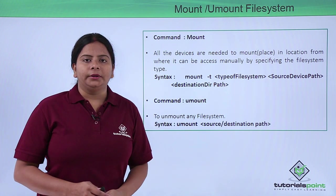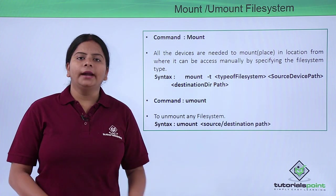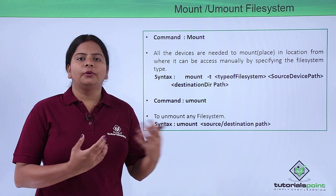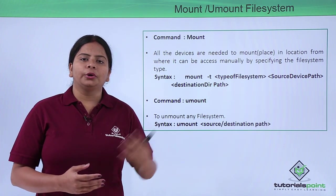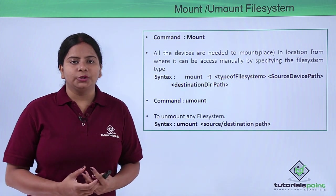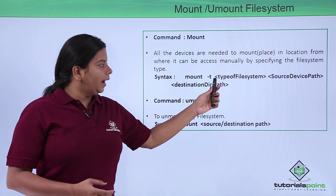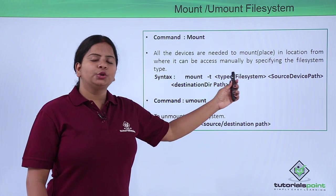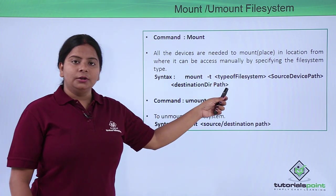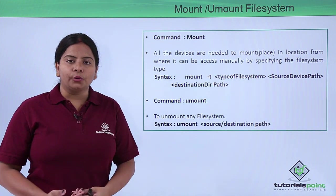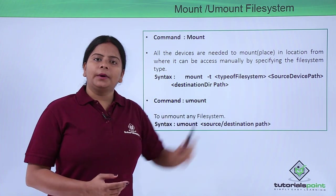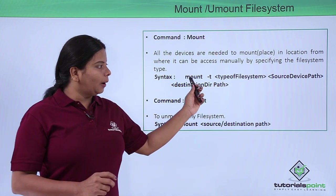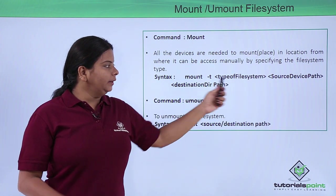Mount can also be used along with the type of mounting specified. Since you can mount different kinds of devices and partitions, you need to specify the file system type during mounting. You can also mount shared directories or FTP directories. To specify the file system type, we use 'mount -t' followed by the file system name. For example, for an ext3 or ext4 partition: 'mount -t ext4 [source path] [destination path]'.